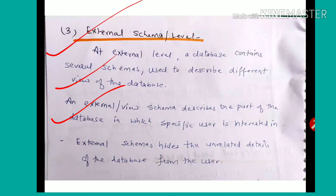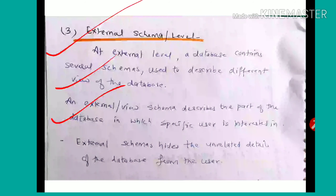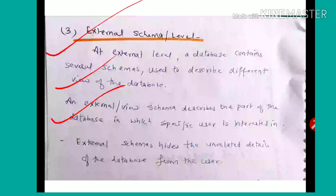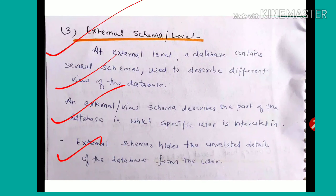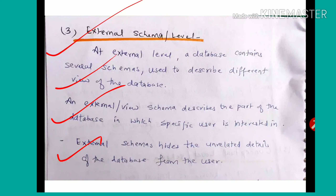An external view or view schema describes the part of the database that a specific user is interested in. The external or view schema allows a specific user to see only their relevant part of the database — not the whole database. External schema hides the unrelated details of the database from the user, concealing details not related to the user's interests.